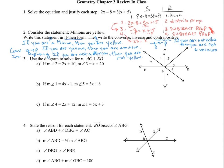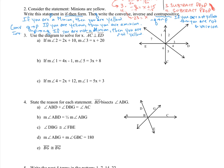Moving on to number 3. It says use the diagram to solve for x. The measure of angle 2 is 2x plus 10, and the measure of angle 3 is x plus 20. AC and ED are perpendicular, so those two angles add up to 90. So 2x plus 10 plus x plus 20 equals 90, giving us 3x plus 30 equals 90, then 3x equals 60, and x equals 20.